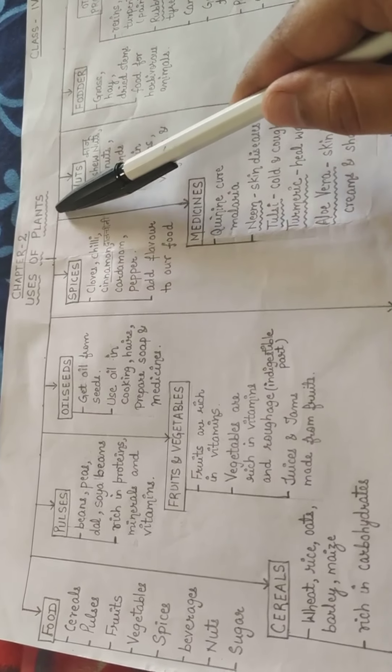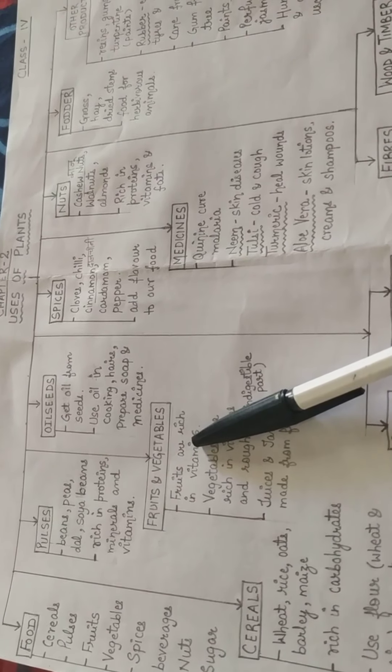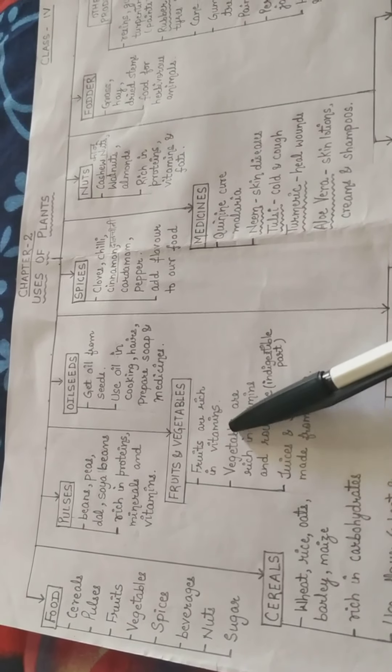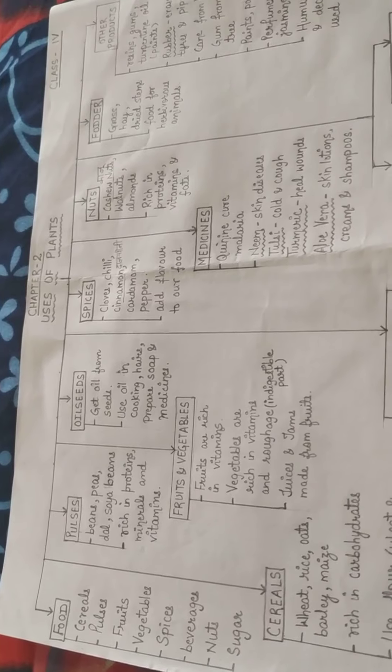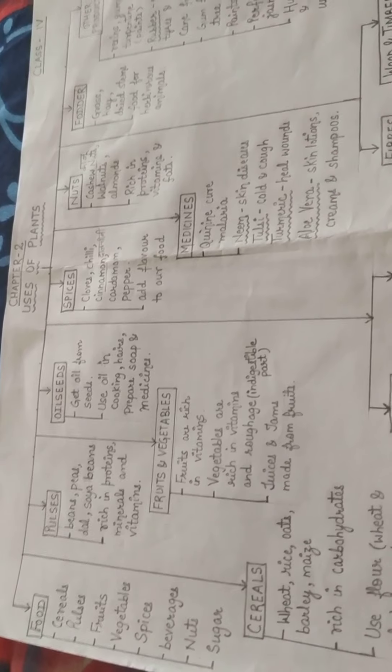The next topic is fruits and vegetables, which we get from plants. Fruits such as apples, bananas, peaches, cherries, grapes, mangoes, and oranges are all rich in vitamins. Juices and jams are also made from fruits. Plants store food in different parts like stem, roots, leaves, flowers, and fruits, and from these parts we get fruits and vegetables.